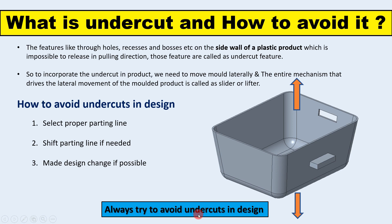Sometimes we require undercut features for part functionality — for example, for strengthening purposes we add certain features. So when there is no possibility to avoid the undercut, we have options like slider and lifter arrangements, which we will discuss.